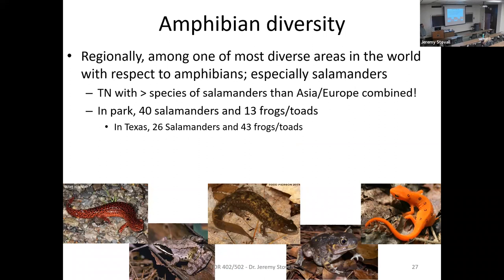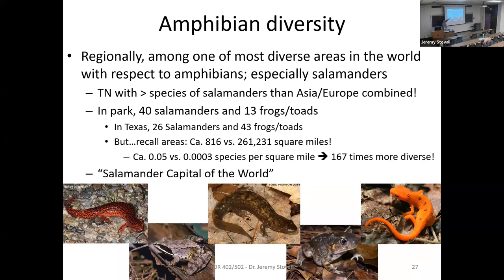For the herps — we'll spend a lot of time on this in the park, especially focused on salamanders. This is going to be the biodiversity hotspot in the entire globe for salamanders. In the park there are 40 species of salamanders and 13 frogs or toads. In Texas there are 26 salamanders and 43 frogs or toads. But on a per-area basis: the park is 816 square miles, Texas is 261,000 square miles. Species per square mile, the Smokies is at 0.05 for herps; Texas is at 0.0003. So the Smokies is 167 times more diverse on a per-area basis. We'll spend a lot of time catching them, trying to figure out what they are — they're difficult to ID, but it's kind of fun.